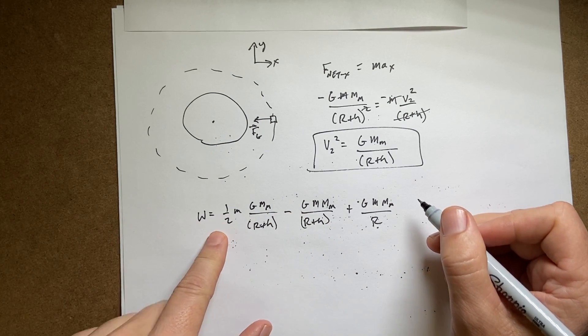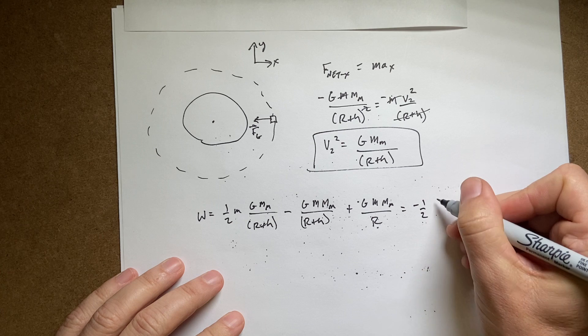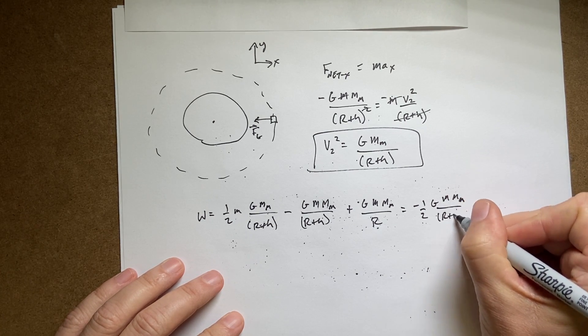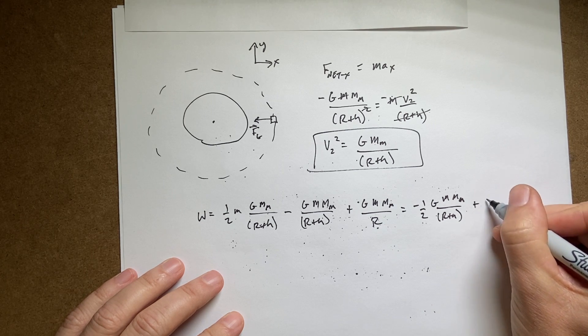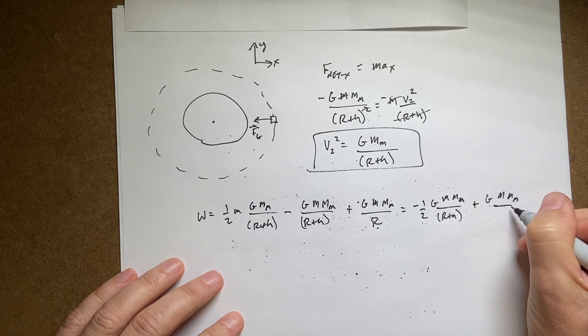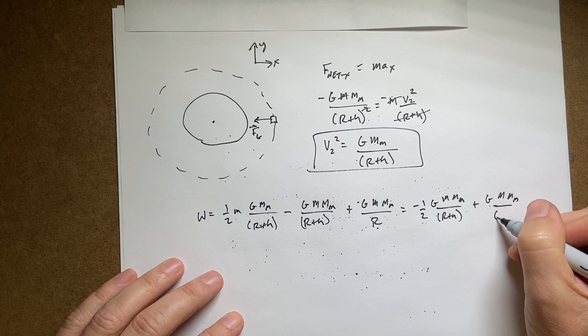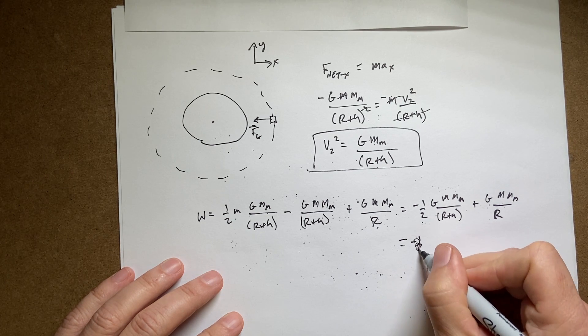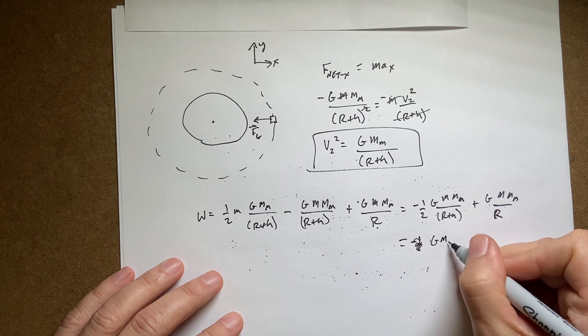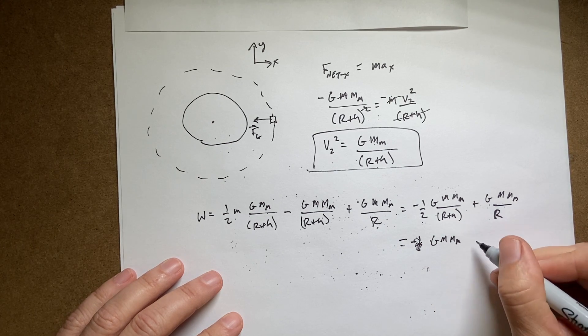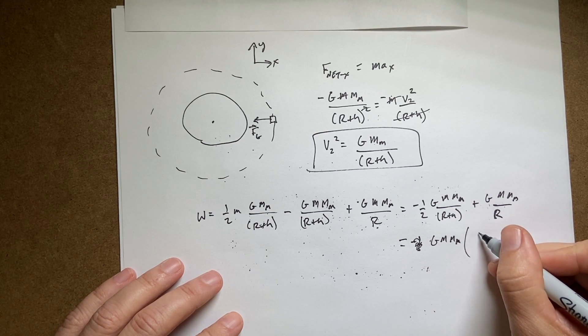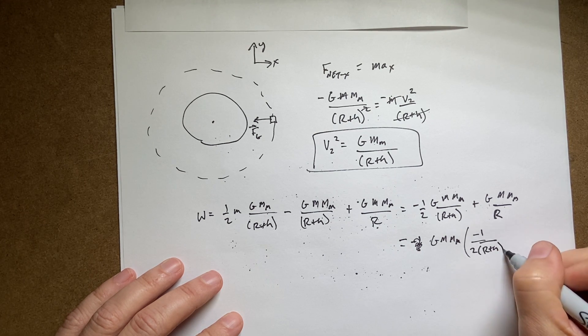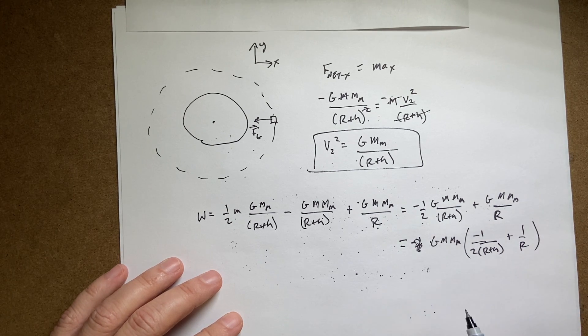You could put in your numbers if you wanted to. So I'm going to get minus one half g m m moon over r plus h plus g m m moon over r. And then I'm going to simplify this. I can say minus one half g m m moon because that's in both terms. And then I get minus one over two r plus h plus one over r.